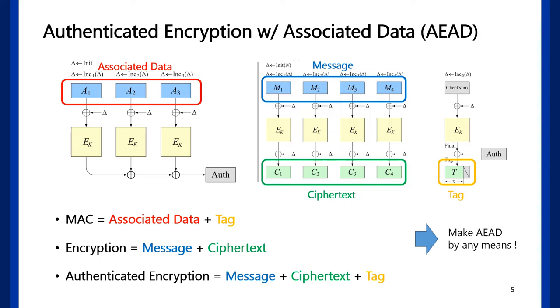AEAD - Authenticated Encryption with Associated Data - is a developed version of authenticated encryption. It has additional input associated data that doesn't demand privacy but demands integrity. By adding associated data, AEAD can perform every cryptographic function.